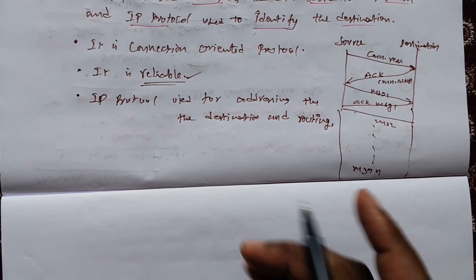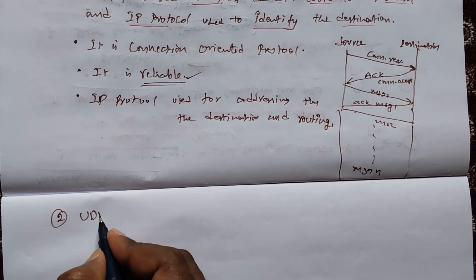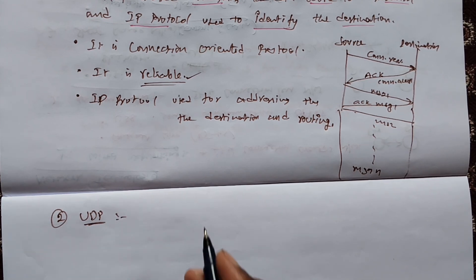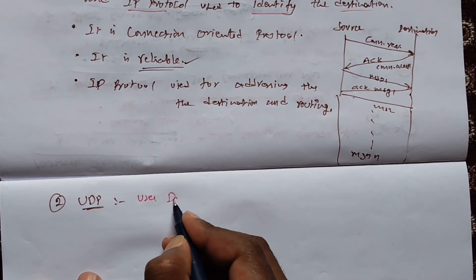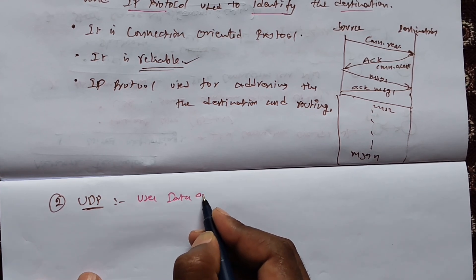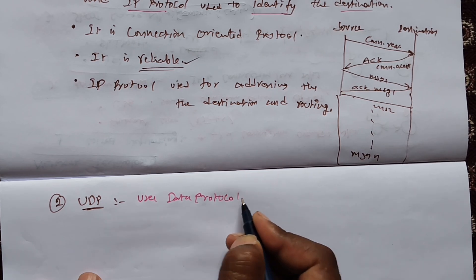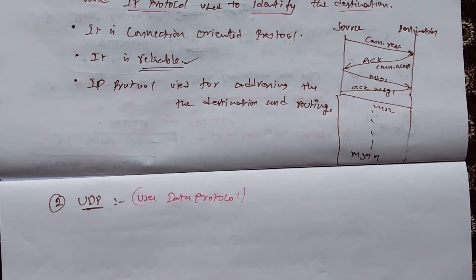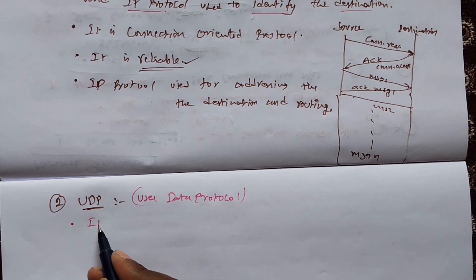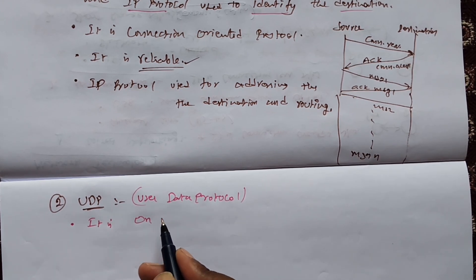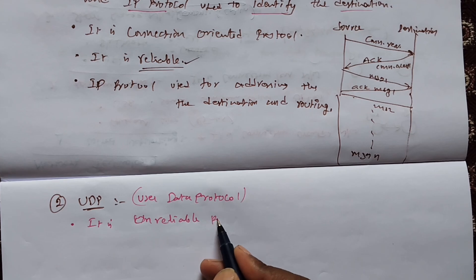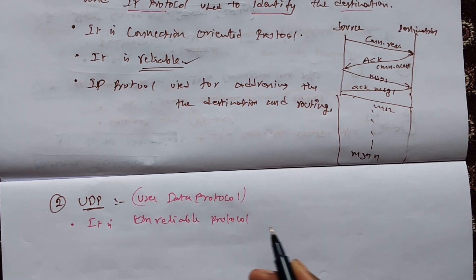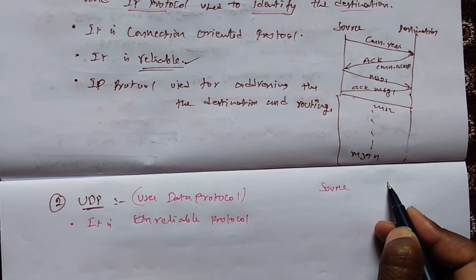The next one is the UDP protocol. UDP stands for User Datagram Protocol. It is completely the reverse of the TCP/IP protocol. It is an unreliable protocol. When the source wants to send data to the destination, there is no need for an initial connection.